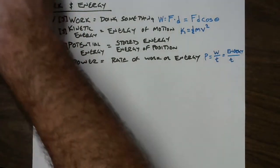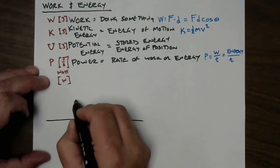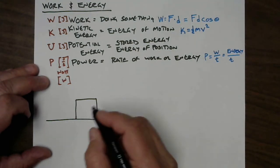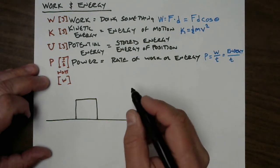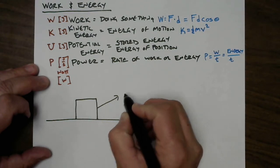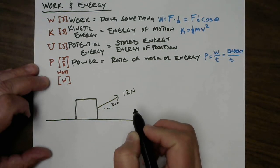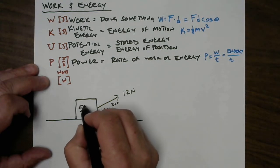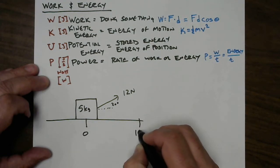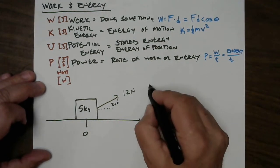So we watched a short video about this, and they talked about a situation in which some poor soul was pulling a block across the floor. We're going to ignore friction for now. This block was being pulled at some sort of angle. Let's call it 12 newtons at a 20 degree angle. And this block is 5 kilograms. We're going to move it from here, 0, to over here, 10 meters across a room. So, how much work is being done?